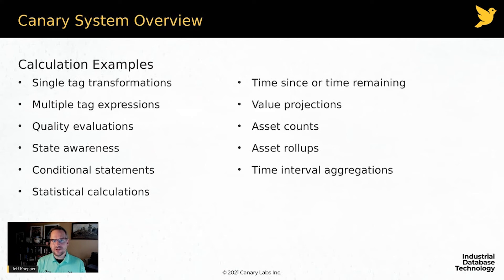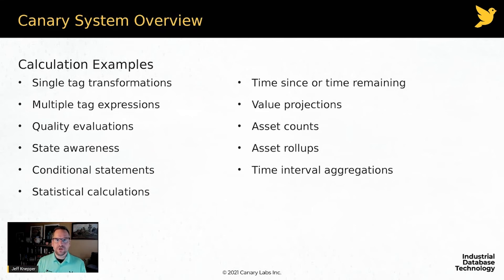State awareness: create an expression that tells me whether my line is running or not. Conditional statements: if the line is running and data quality is greater than 96%, output true; if not, output false.